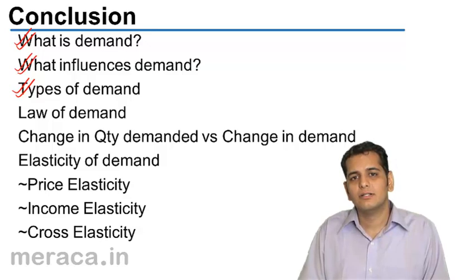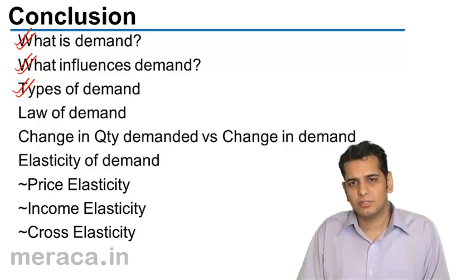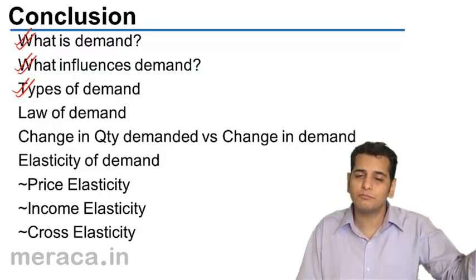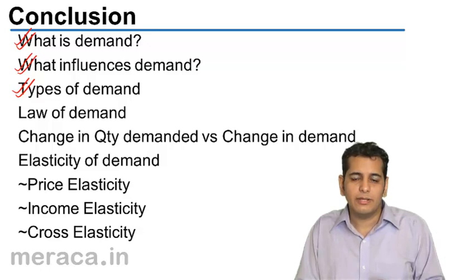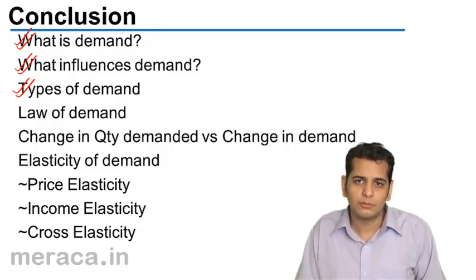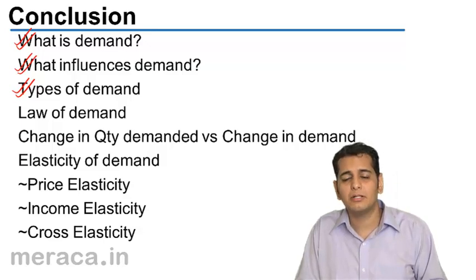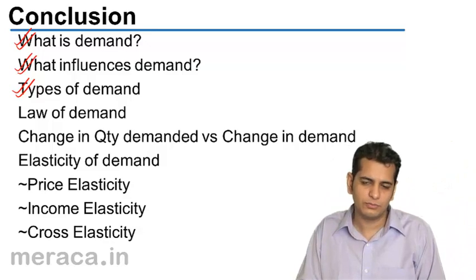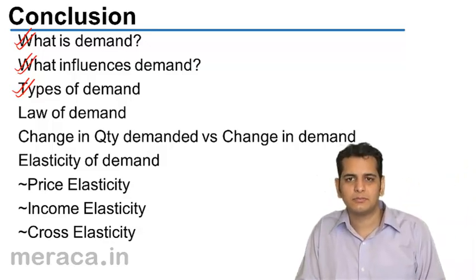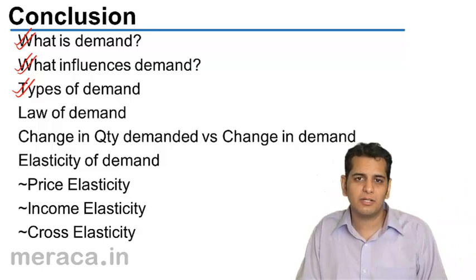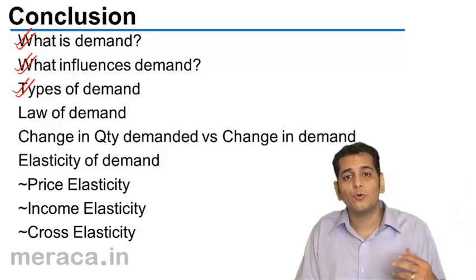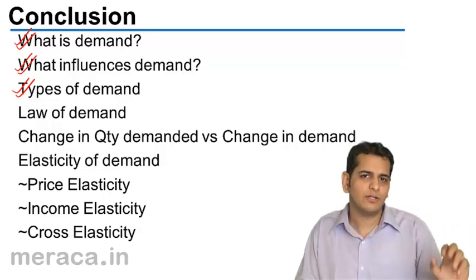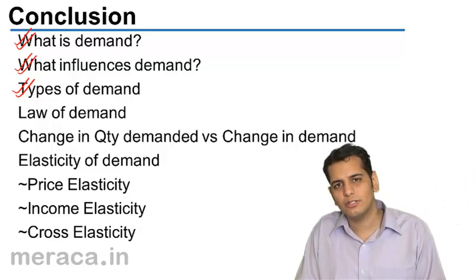Then we did derived demand and autonomous demand. Derived demand is the demand of a good that derives from some other good — it does not have independent demand of its own; its demand is dependent on the demand of some other good, thus we call it derived demand. Whereas autonomous demand is the demand of a good by its own use and its own qualities, independent of the demand of other goods.